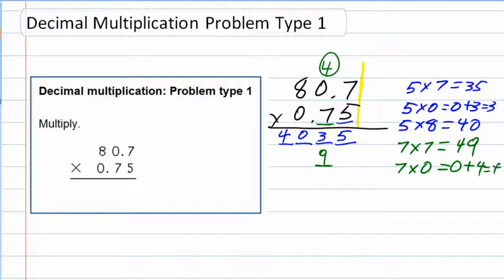So that 4 goes in the next space. And then lastly, multiply the 7 on the bottom by the 8 in the top. That gives us 56. And since there's nothing else to multiply on the top, I can go ahead and put both of those digits down there.